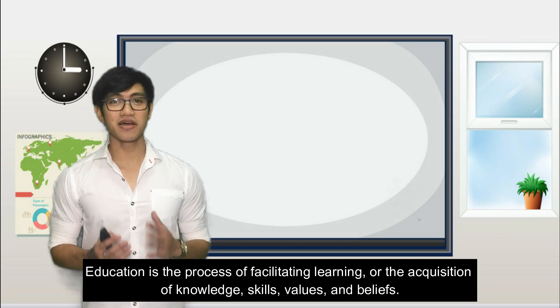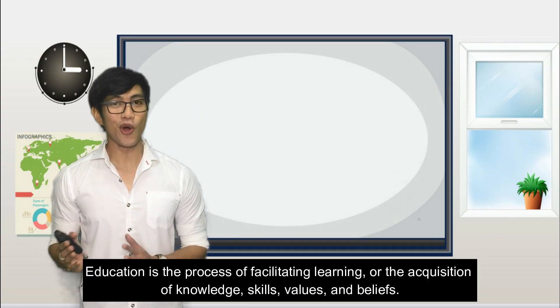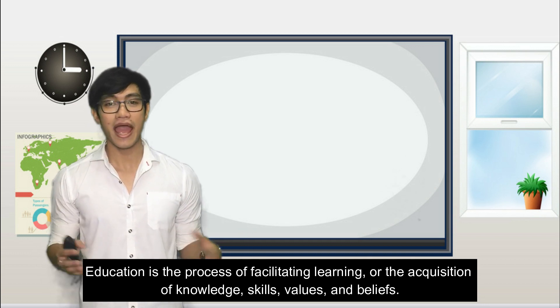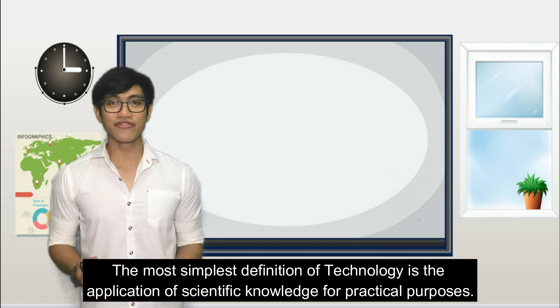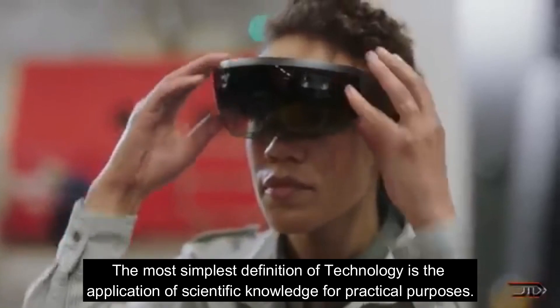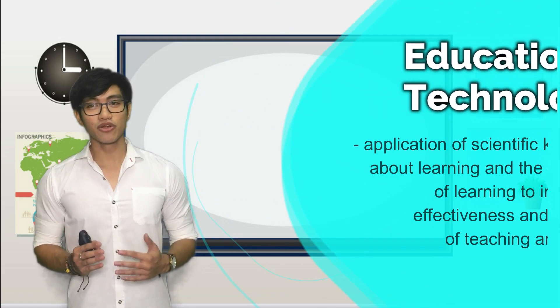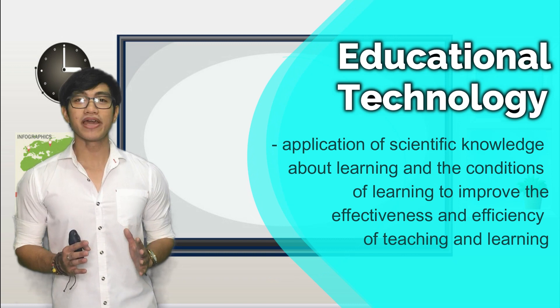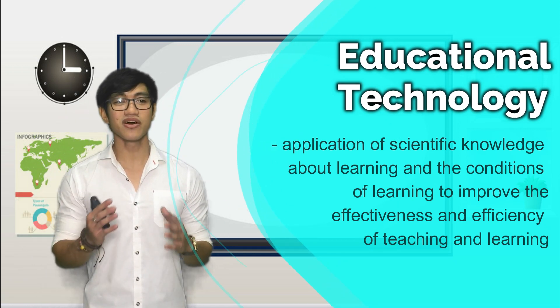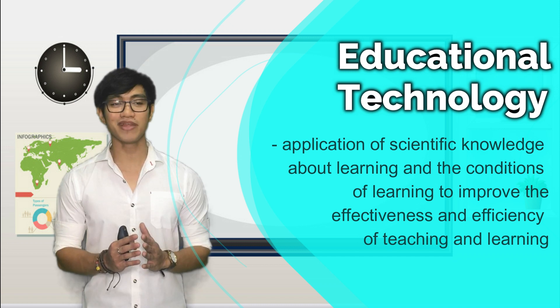Education is the process of facilitating learning or the acquisition of knowledge, skills, values, and beliefs. On the other hand, the simplest definition of technology is the application of scientific knowledge for practical purposes. Therefore, educational technology is the application of scientific knowledge about learning and the conditions of learning to improve the effectiveness and efficiency of teaching and learning.